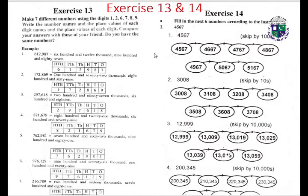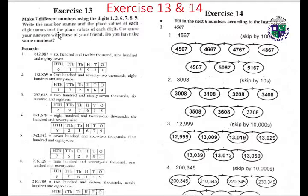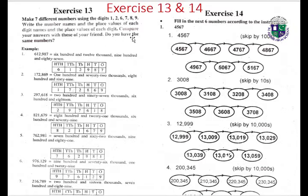Exercise thirteen: make seven different numbers using the digits 1, 2, 6, 7, 8, 9. Write the number name and place value of each digit. Compare your answer with those of your friend — do you have the same numbers?